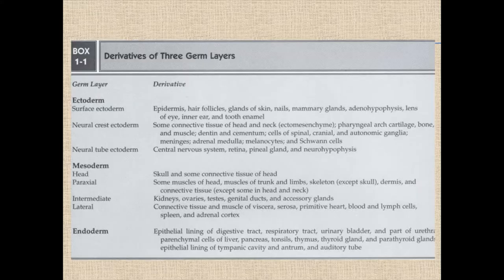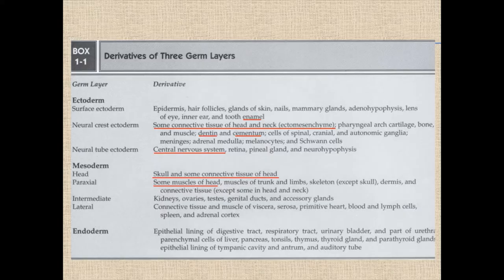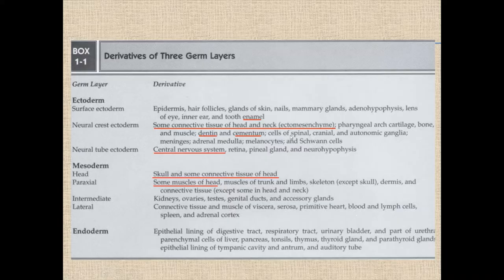It is important to know the different derivatives of the germ layers, mainly those related to the craniofacial area. The surface ectoderm gives rise to enamel. The neural tube ectoderm gives rise to the central nervous system. The neural crest ectoderm migrates laterally and contributes to the different connective tissues of the head and neck — called ectomesenchyme — and contributes to dentine, cementum, and other structures. Parts of the skull and some muscles of the head come from the paraxial part of the mesoderm.